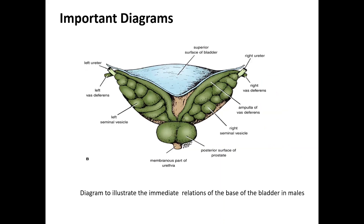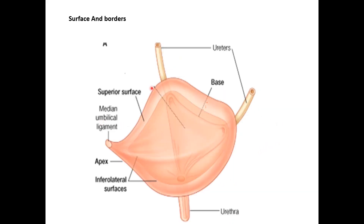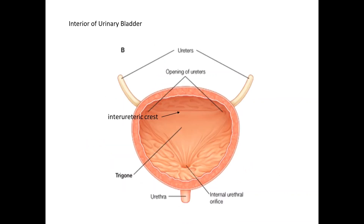To conclude, the key diagrams to master include: the relations of the male urinary bladder — showing the recto-vesical pouch related to the superior part of the base, the two seminal vesicles with the ampullae of the vas deferens related to the inferior base, the denonvilliers fascia, and the rectum. Also make diagrams showing the surfaces and borders of the urinary bladder and the interior of the urinary bladder, along with the peritoneal relations of the male and female pelvis.